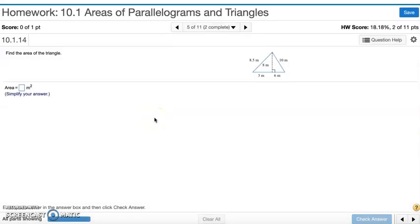Number 5. Find the area of the triangle. So the formula for the area of a triangle is base times height divided by 2.